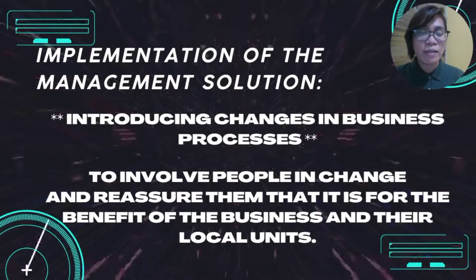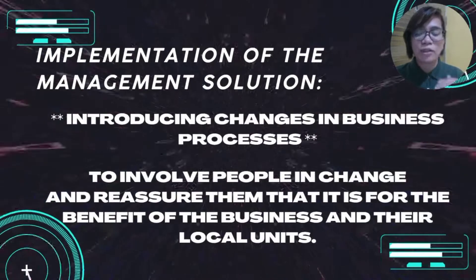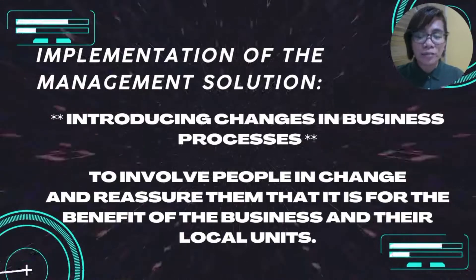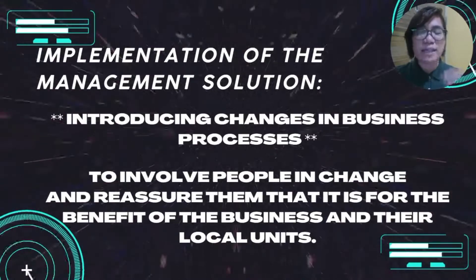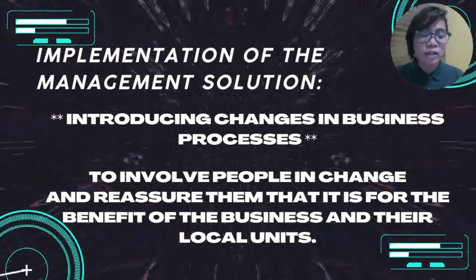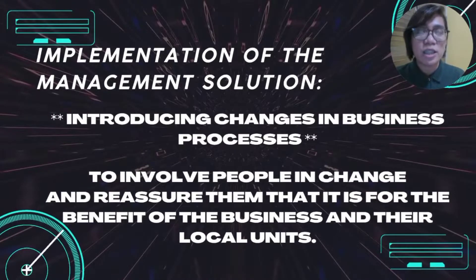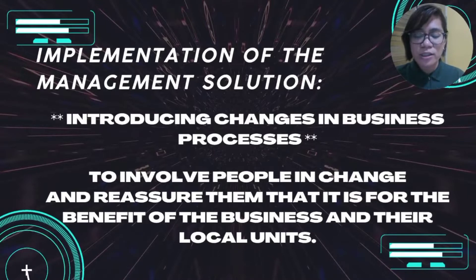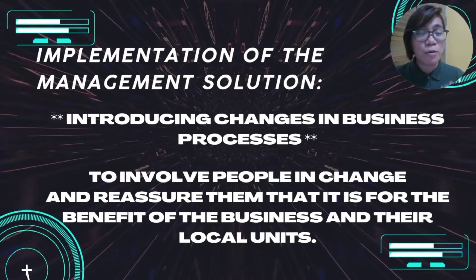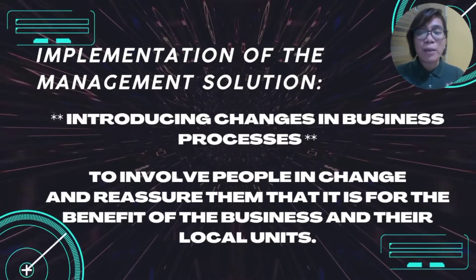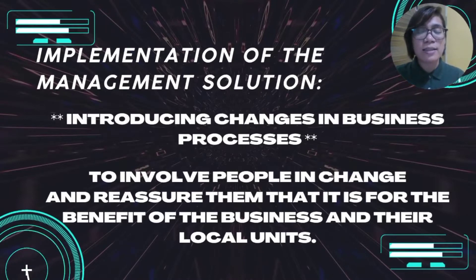The next issue is introducing changes in business processes. Your credibility, influence, and capacity to involve users in the change of design process will all be the key factors in your success as a change agent. The acceptance of your authority as a result of your ability, foresight, or other traits is referred to as legitimacy. In order to persuade others that change is both possible and desirable, you should choose a viable change approach, defined as evolutionary yet with a vision. An important strategy is to involve people in change and reassure them that it is for the benefit of the business and for their local units.